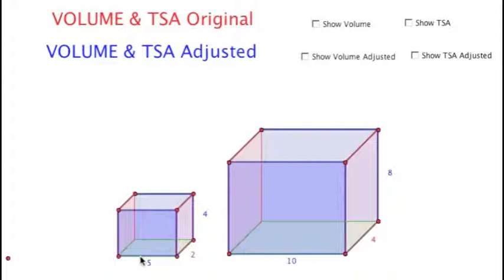In this diagram we have the original box, here is the smaller box, and we've adjusted it by a ratio of 2, multiplying each of the sides—height, width, and length—by 2. The question is how does that affect the volume and how does that affect the surface area?